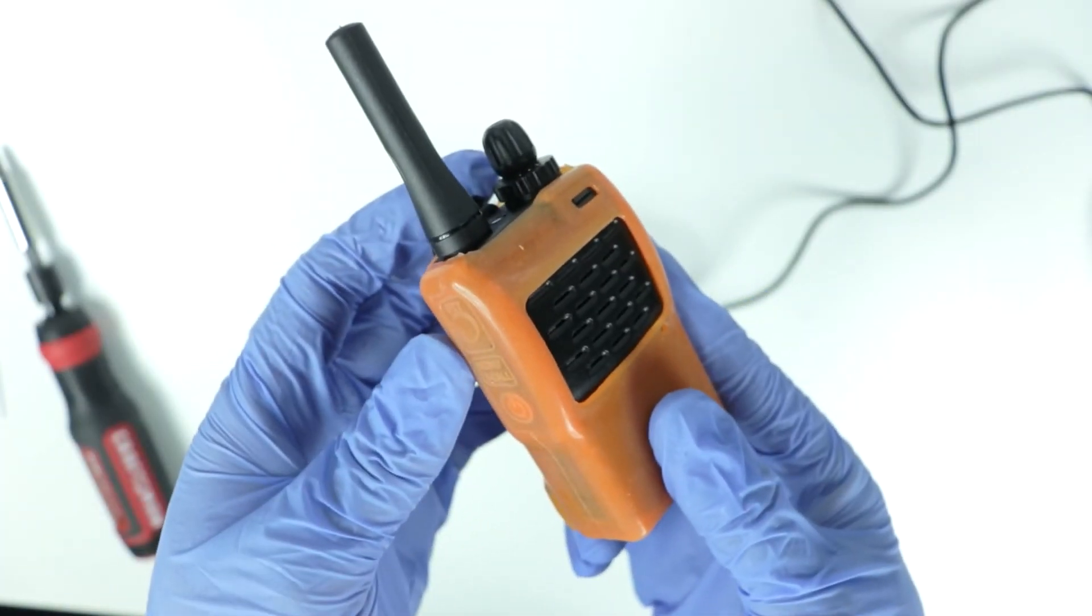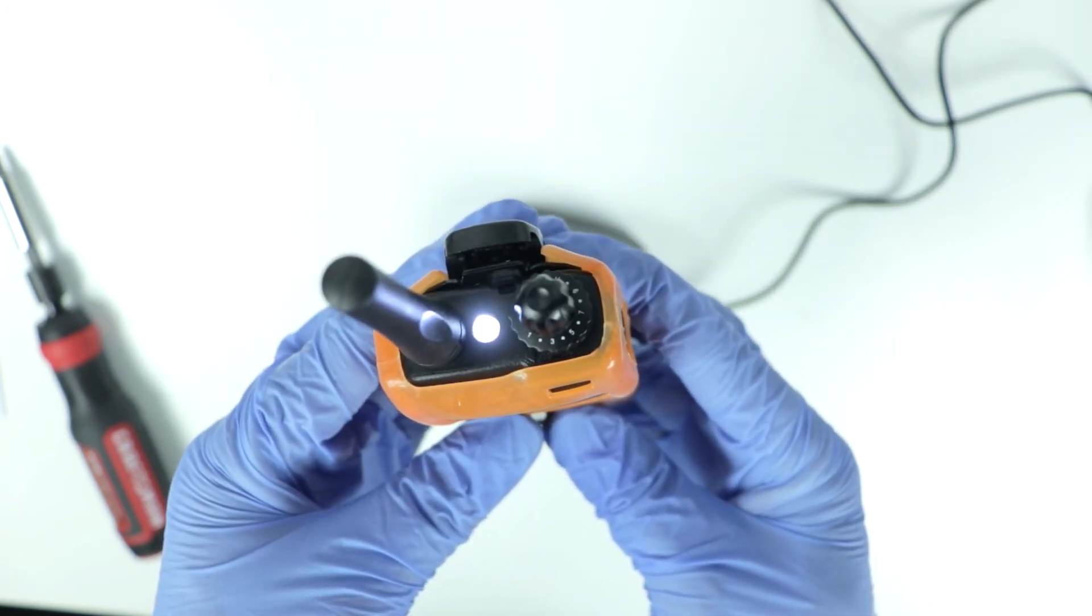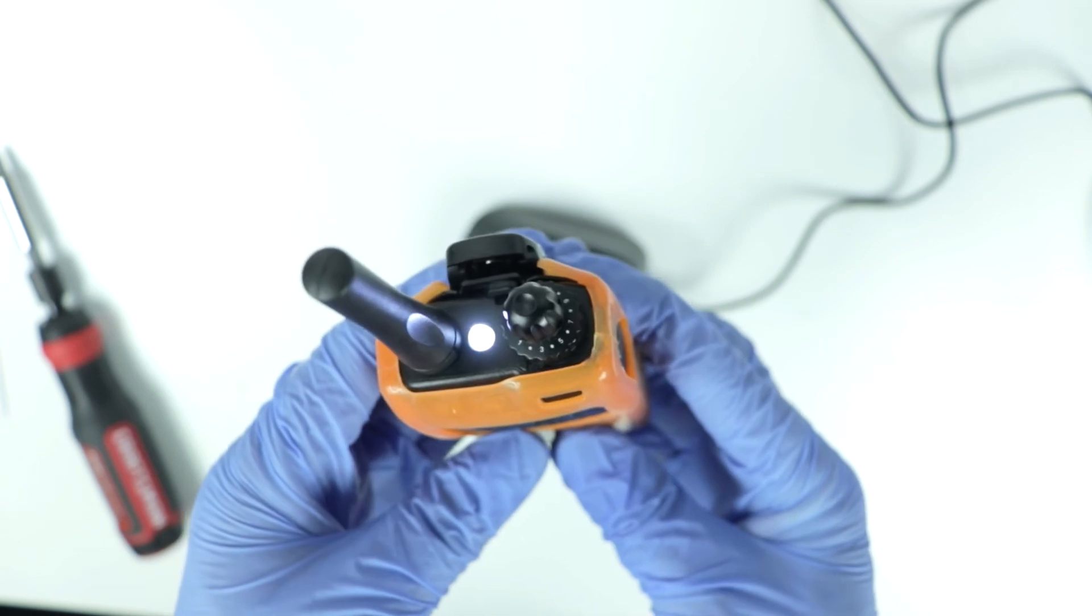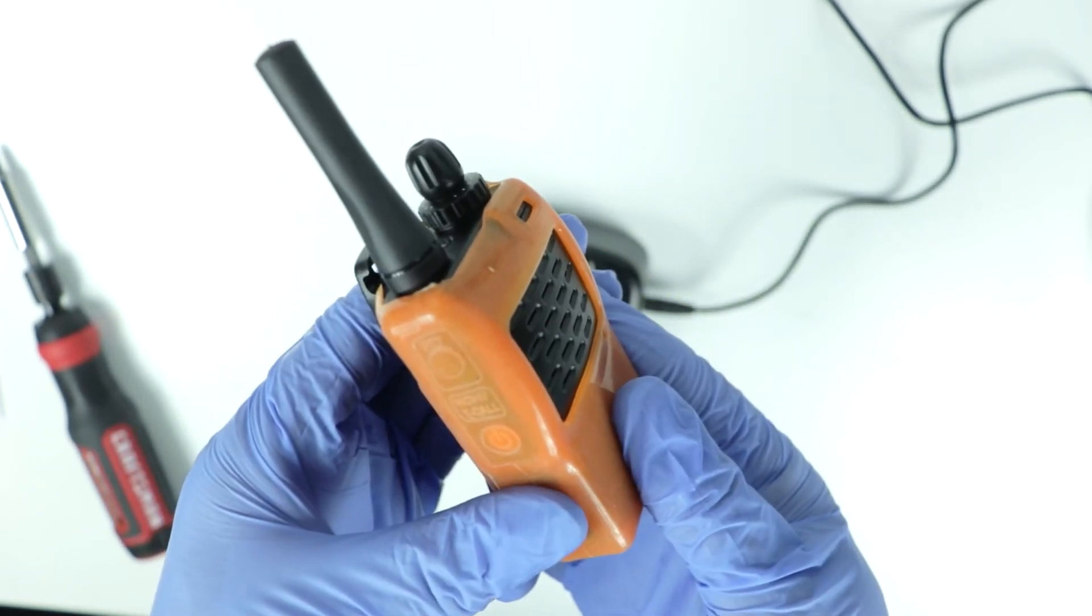And finally, one little bonus tip. If you tap the power button, a flashlight turns on on the top of the radio. That can be a pretty handy little tool. If you tap the button one more time, the flashlight will turn off.